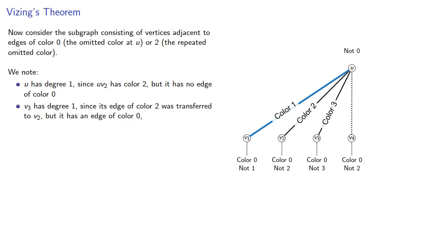V3 also has degree 1. Remember, it had an edge of color 2, but in our cascade this was transferred to vertex 2. However, it still has an edge of color 0. And finally, v4, where we got the repeated omitted color, has degree 1, since it has an edge of color 0, but no edge of color 2.